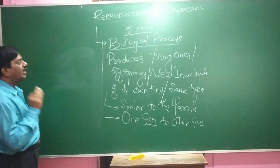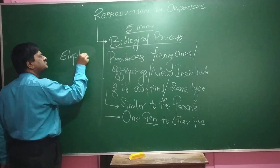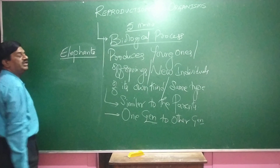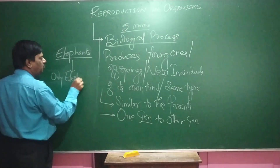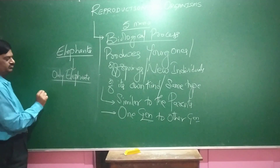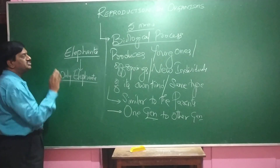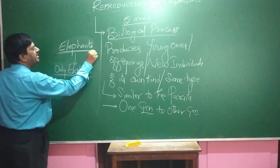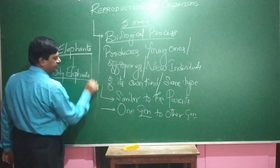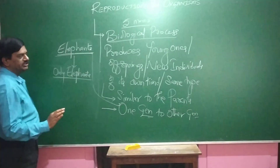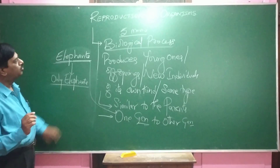We are going to see how reproduction will be continued. For example, elephants will reproduce to produce only elephants, not other animals. If elephants never reproduce at all, automatically their generation will be stopped. So reproduction is a must to continue the generation from one generation to another.